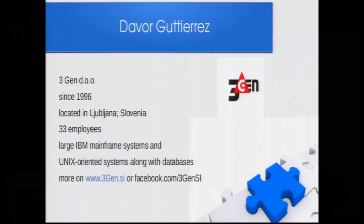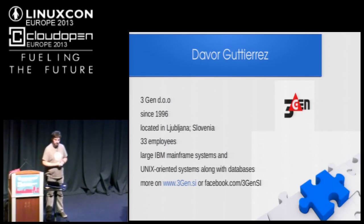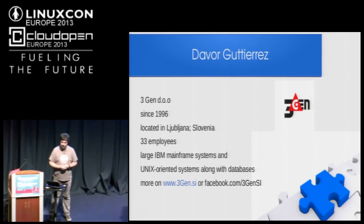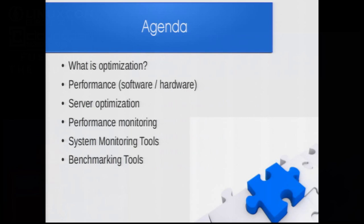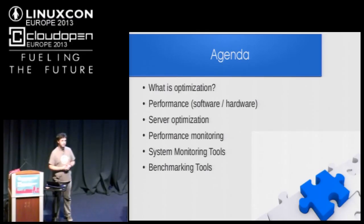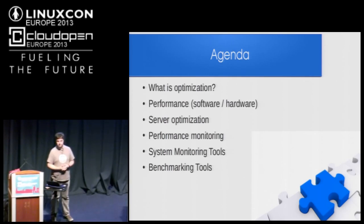I'm working for the company 3GN. The company exists since 1996, it's located in the capital Ljubljana. We have 33 employees. Our main business is maintenance of large IBM mainframe systems for the Slovenian state government and Unix-oriented systems with Oracle databases. We do a lot of work with virtualization, primarily using Red Hat Enterprise virtualization and Oracle VM along with other KVM and Xen solutions.